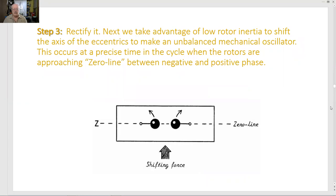Step three, rectify it. Next, we take advantage of low rotor inertia to shift the axis of the eccentrics to make an unbalanced mechanical oscillator. This occurs at a precise time in the cycle when the rotors are approaching zero line between negative and positive phase.